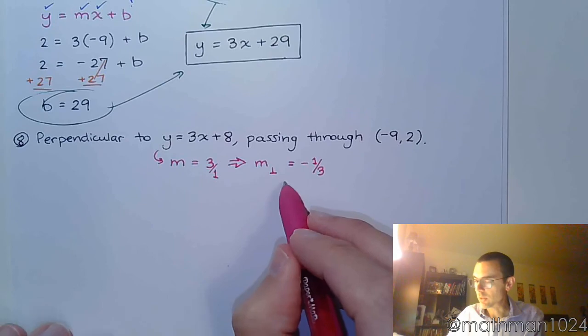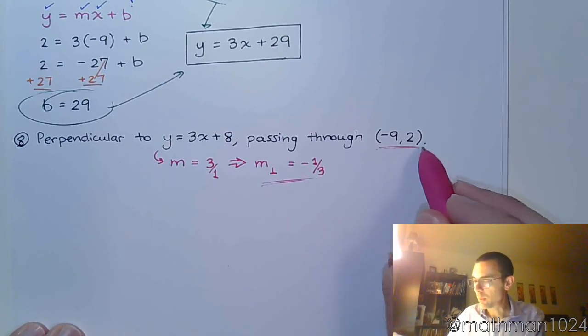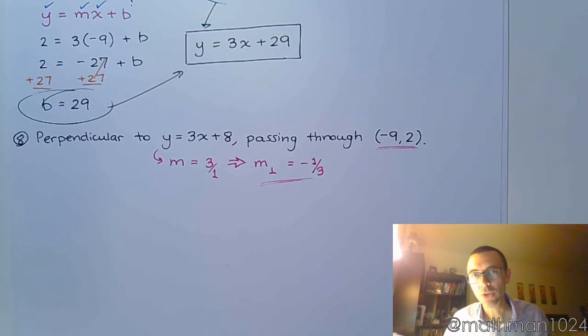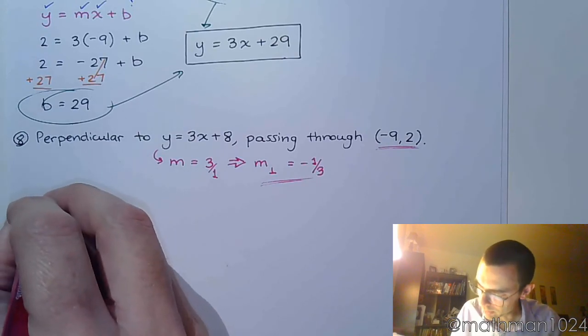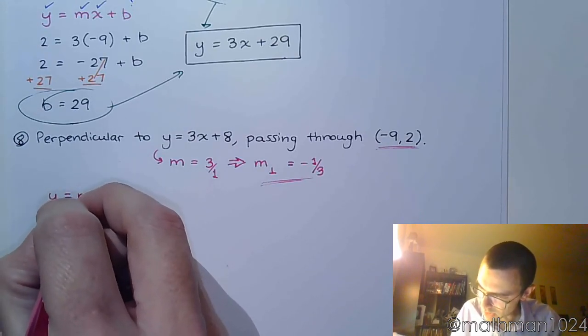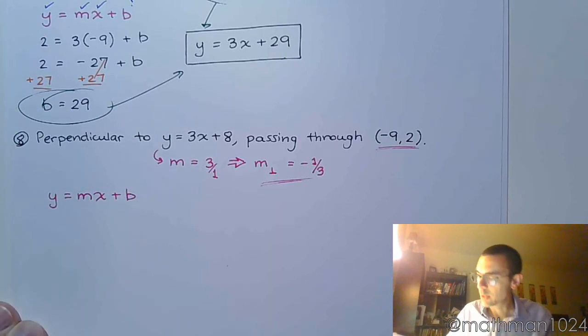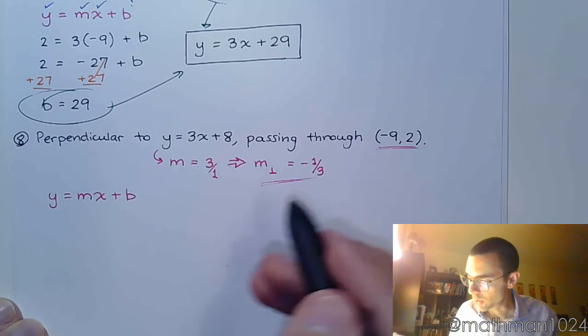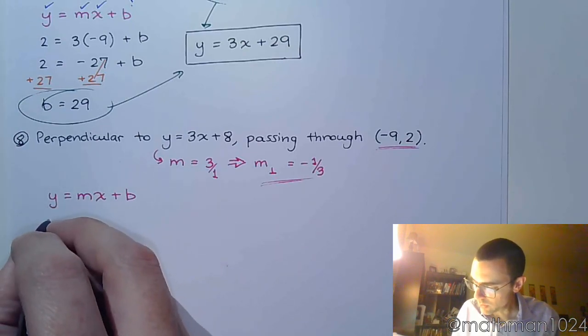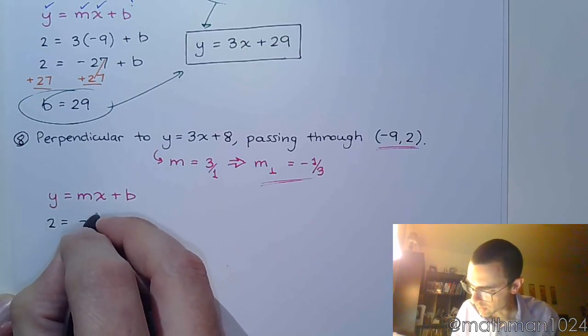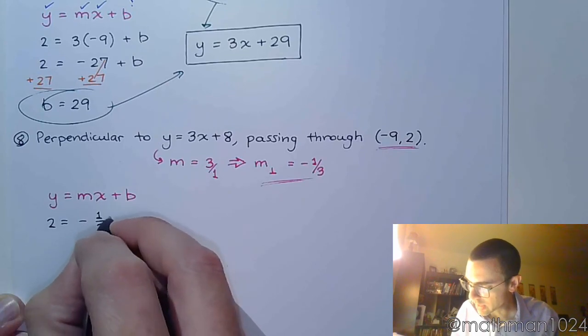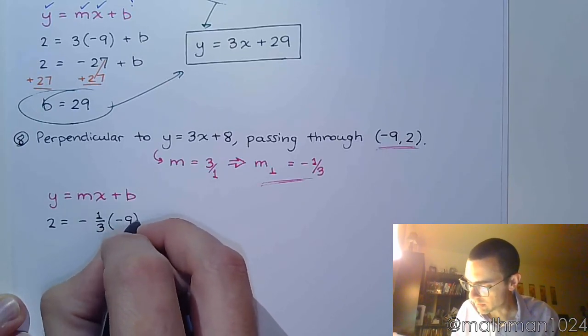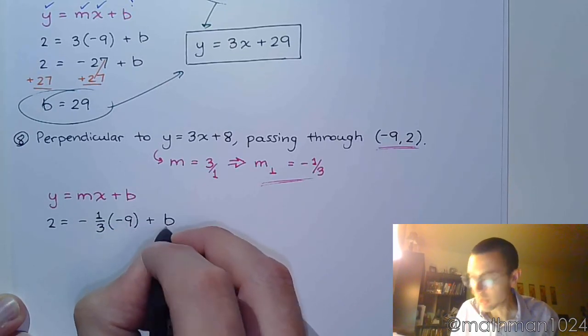So I've got my slope. I've got my point. So it's time to rock and roll with that slope intercept form. So y equals mx plus b. Let's plug in everything that we know. We know that y is 2. My slope is negative 1 third. And x is negative 9. And I'm going to find out what b is.